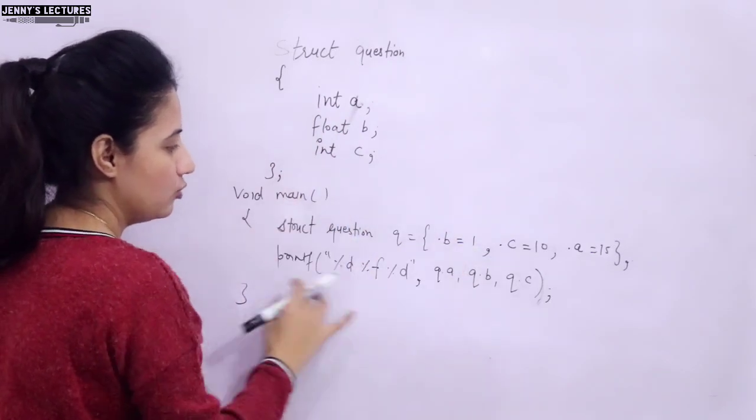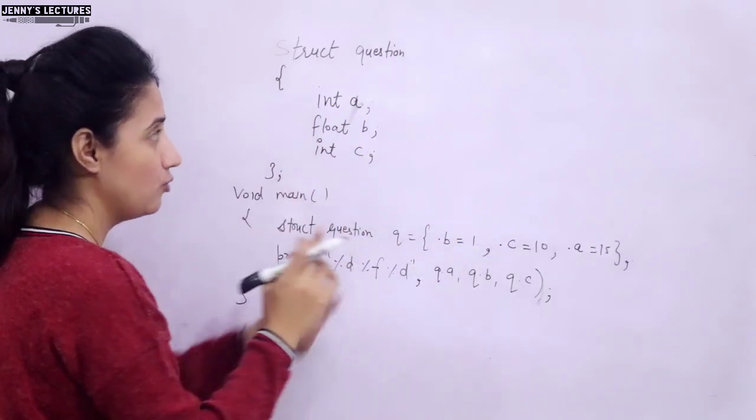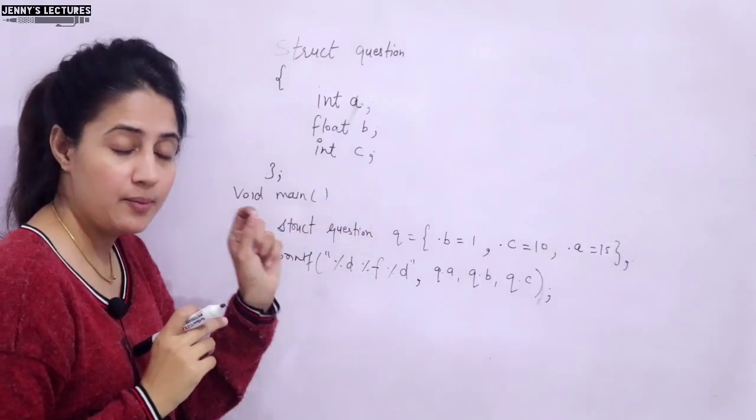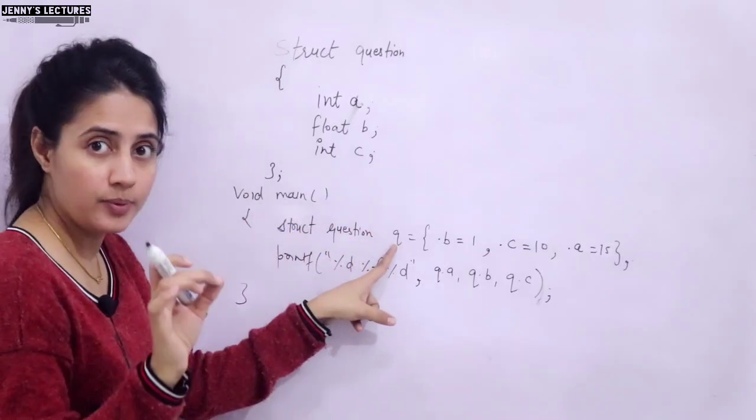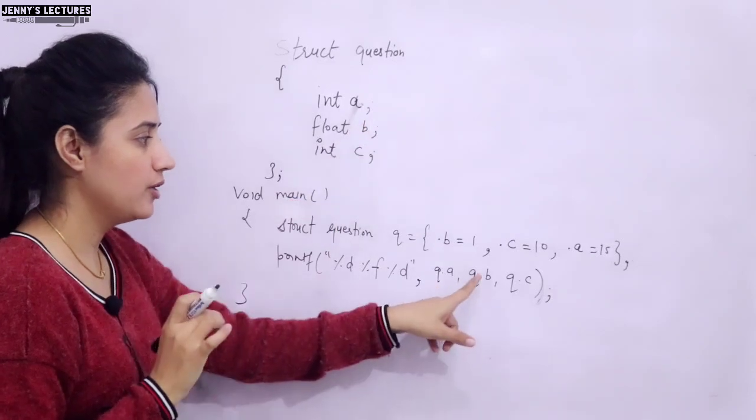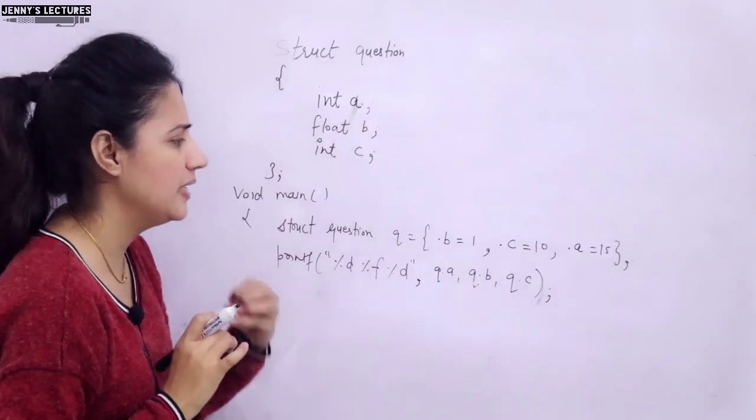Right. In main, I am just assigning some values and I am just printing like how to access these structure members. The name of the variable, variable is q dot operator and the name of the member. Q dot a, q dot b, q dot c. So what output you will get here?